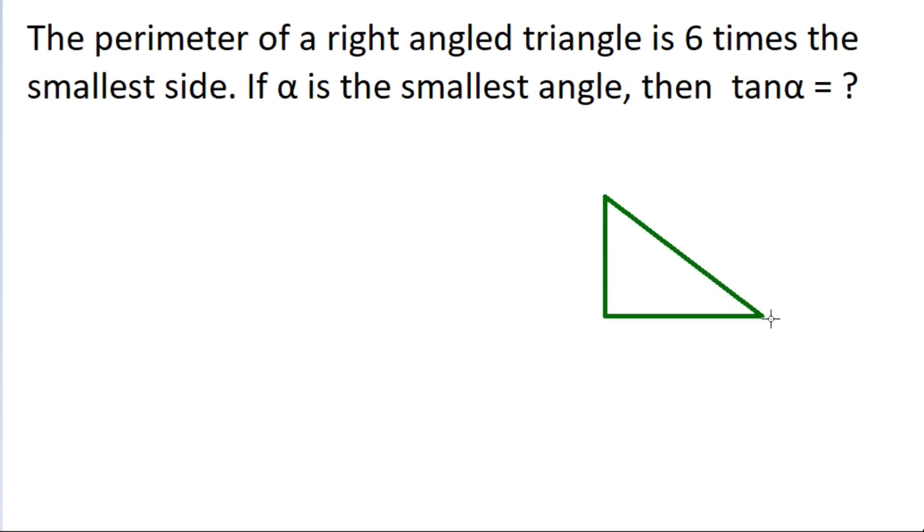We have a right-angled triangle. Suppose this side is a, this side is b, and this side is c. This angle is α, and α is the smallest angle.